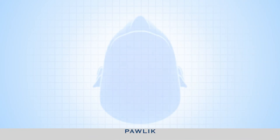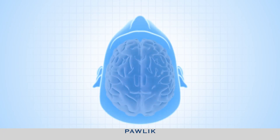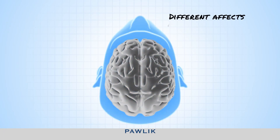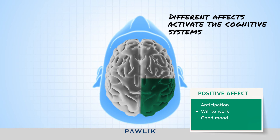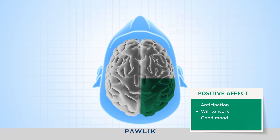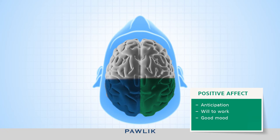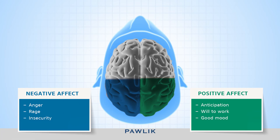With regard to our brain system, the different effects activate the four cognitive systems in different ways. Positive effect activates the spontaneous doer, encouraging us to realize our intentions and ensuring that we put things into action. We exhibit anticipation, a will to work, and a good mood. The controller, in turn, is activated by negative effect and improves our eye for detail, enabling us to pick up on mistakes and discrepancies through emotions such as anger, rage, and insecurity.